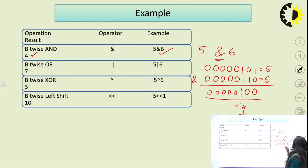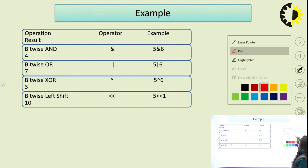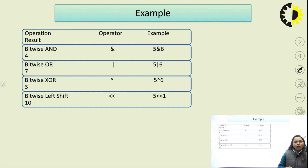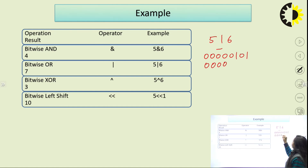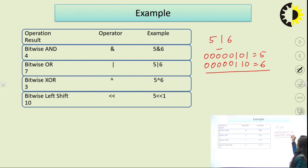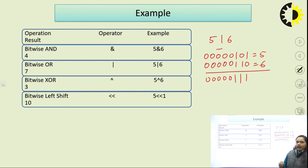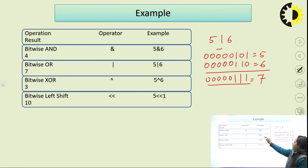For bitwise OR, if any one of the bits is 1, the result is 1. So 5 OR 6: 5 is 00000101 and 6 is 00000110. Performing bitwise OR — 1 OR 0 gives 1, 0 OR 1 gives 1, 1 OR 1 gives 1 — we get 00000111, which is 7. So 5 | 6 equals 7.